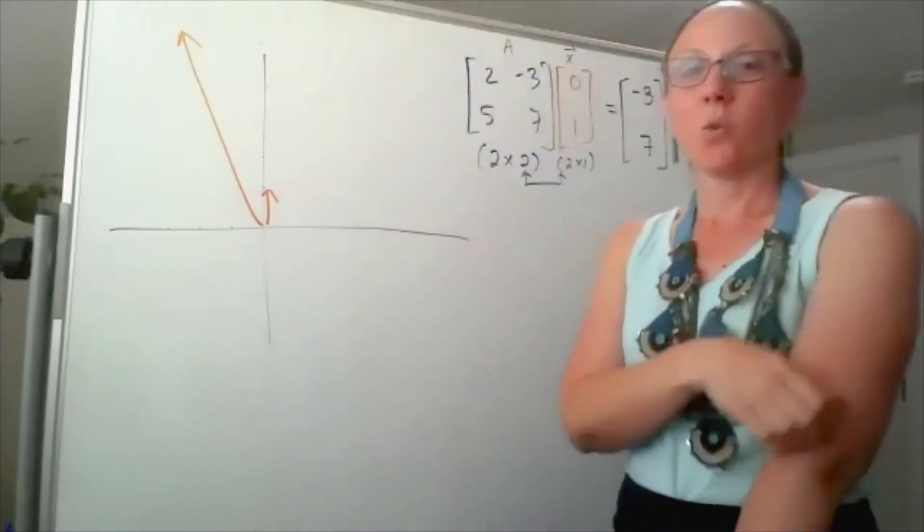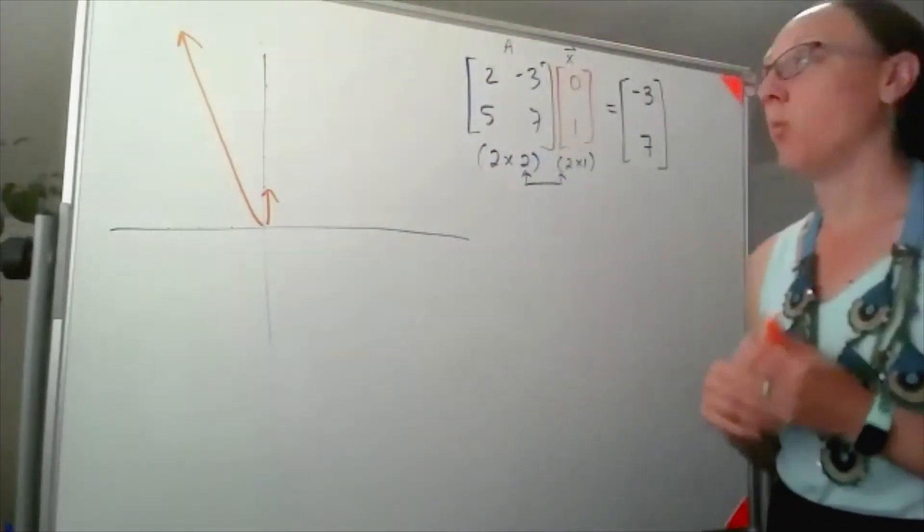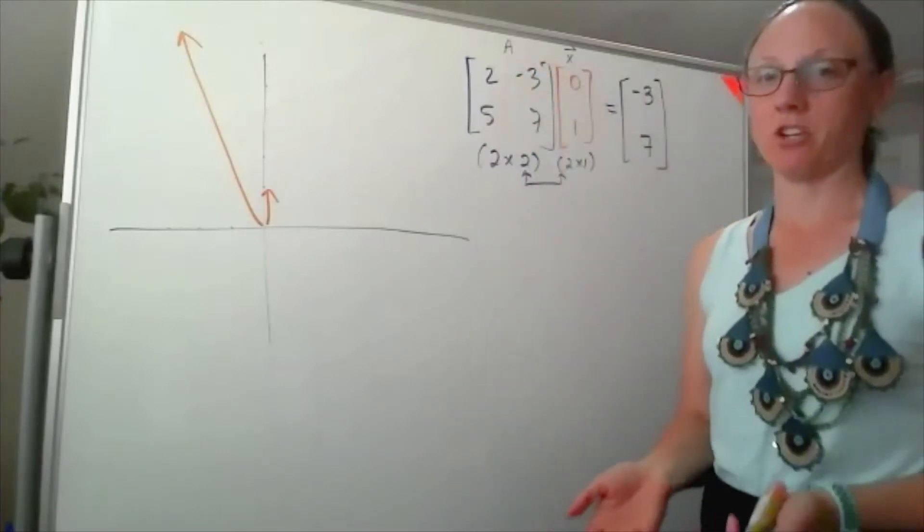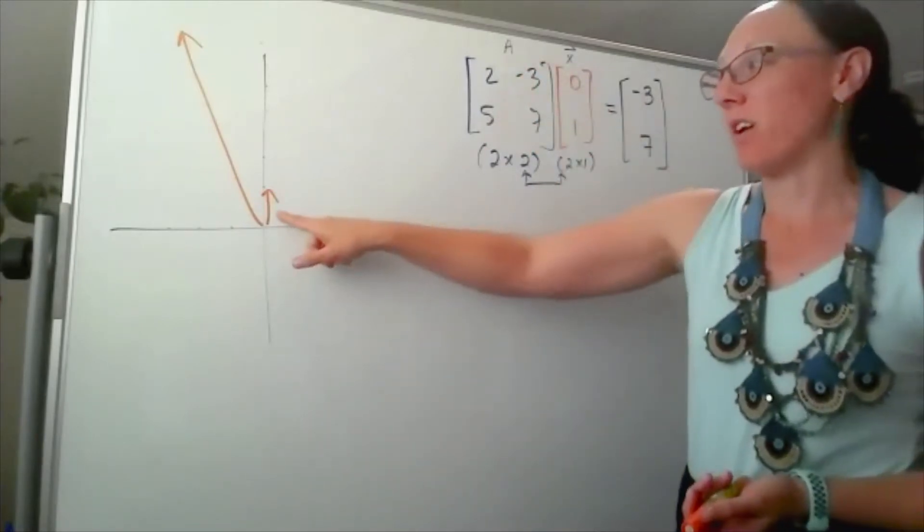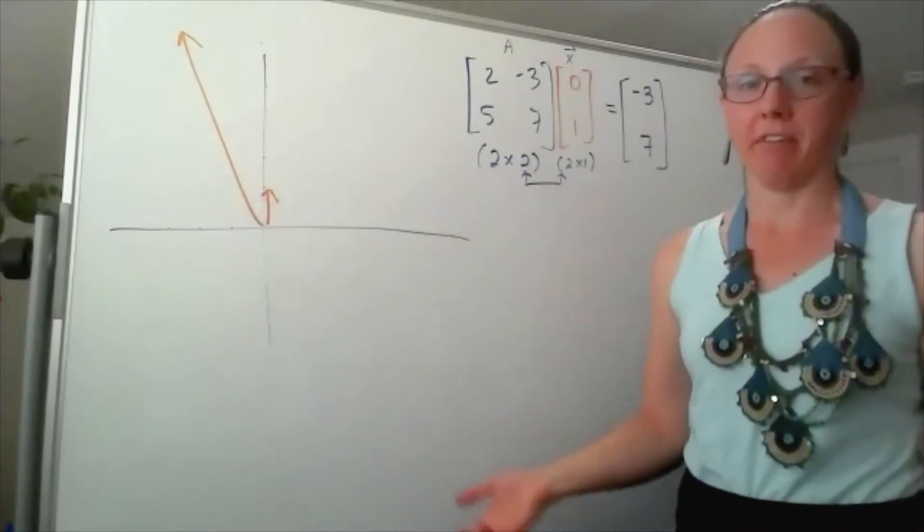So in general, what a matrix does as a linear transformation is it's changing one vector into some completely different vector.